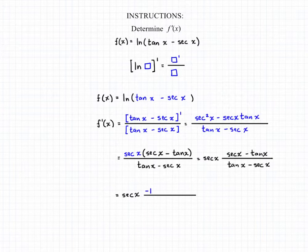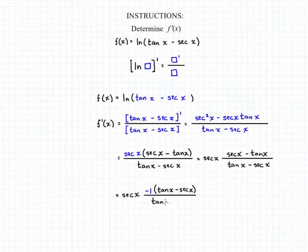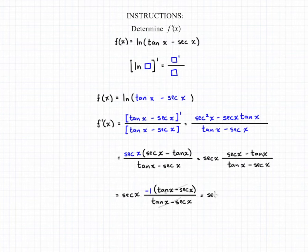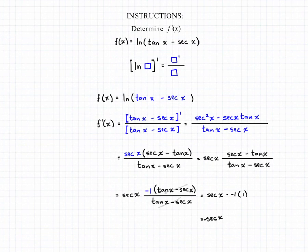Now we can use a little trick of algebra — we factor out a negative 1 from our numerator, which leaves us with a positive tangent of x and a negative secant of x in the numerator. We then have a positive tangent of x and a negative secant of x in our denominator as well, which we can then cancel out. This leaves us with secant of x times negative 1 times the 1 that results from cancelling out all those trig functions, giving us our final answer: negative secant of x.